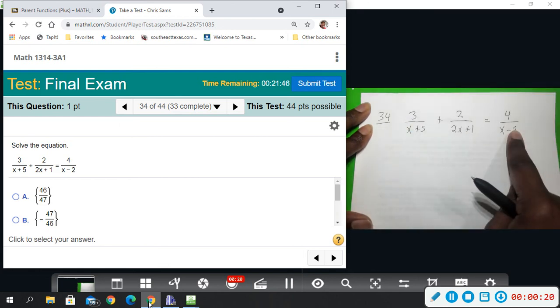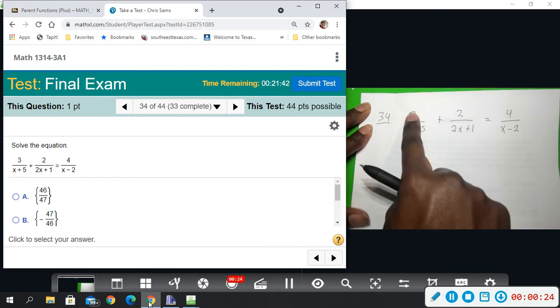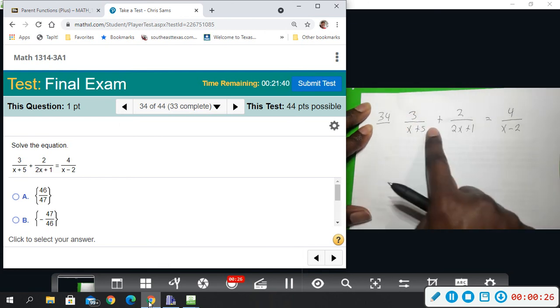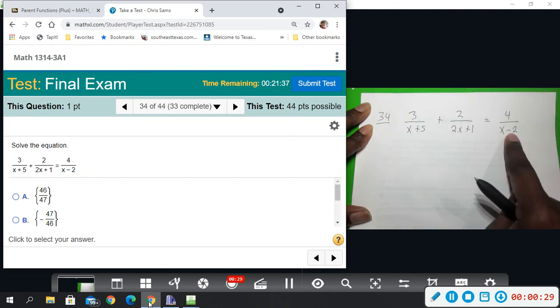If I multiply all three of these denominators, when I multiply by this term what happens is the x plus 5 goes away and it picks up the other two.